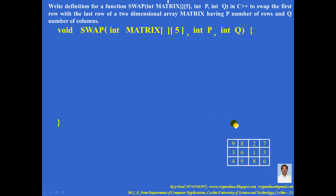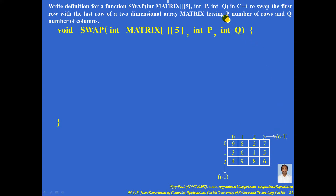Consider a two-dimensional array with three rows and four columns. For the first row, the index is 0, next row index 1, next row index 2. This is the upper bound of the row, which is number of rows minus 1. Similarly, for the first column the index is 0, then 1, 2, and 3. This is the upper bound of the column, that is, number of columns minus 1. Here, the number of rows is given as p, and the number of columns is given as q. So this must become p minus 1, and this must become q minus 1.